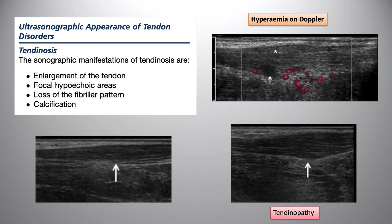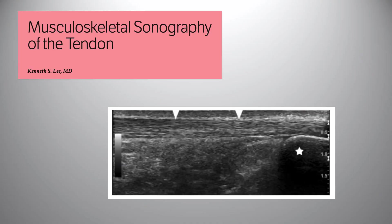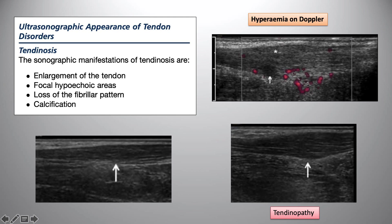Ultrasound is useful to diagnose tendinopathy. While tendinopathy is primarily a clinical diagnosis, ultrasound is useful to confirm it and also to know the stage and severity, although imaging findings might not always correlate with symptoms. It's part of the sign, symptoms, and imaging cluster. On ultrasound you see focal hypoechoic regions, loss of that bright fibrillar pattern, areas of darkening, thickening of the tendon, and increased blood flow — the typical tendinopathic appearance in peripheral tendons.